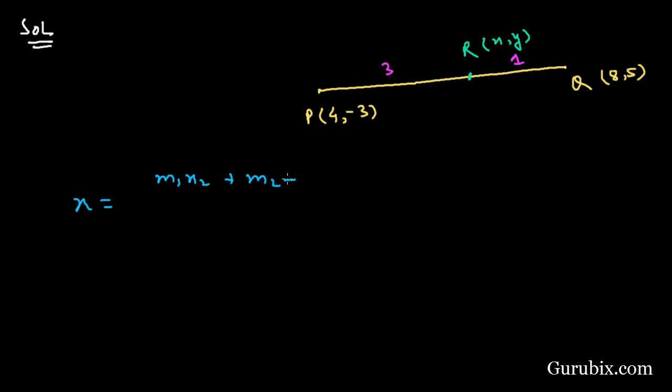The section formula is x equals to m₁x₂ plus m₂x₁ over m₁ plus m₂. So the x coordinate will be: this is m₁, this is m₂. This means we shall multiply 8 with 3, so 3 times 8 plus 1 times 4 over 3 plus 1.